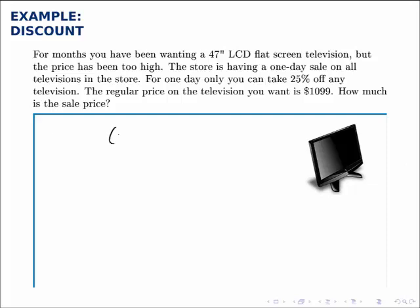So if we do that, calculating 25% of $1099, notice that we wrote the 25% as a decimal to do the multiplication. And if you multiply those two, you find that 25% of $1099 is $274.75.